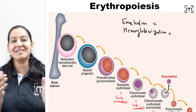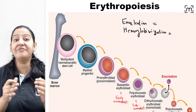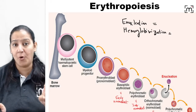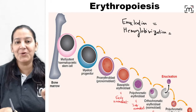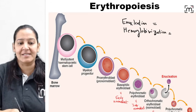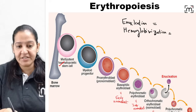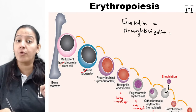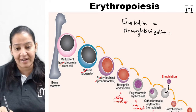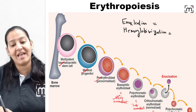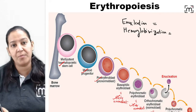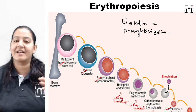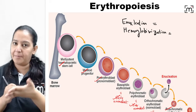Hello everyone. In this image you can see the various stages of erythropoiesis — that is RBC formation — which takes place in the bone marrow. The first precursor is the hematopoietic stem cell, which gives rise to myeloid progenitor, which gives rise to pronormoblast, then early normoblast, intermediate normoblast, late normoblast, reticulocyte, and finally the RBC — that is erythrocyte. So these are the precursors.